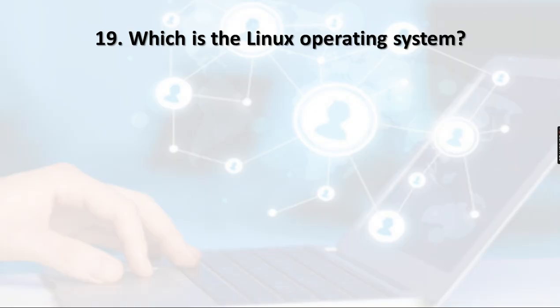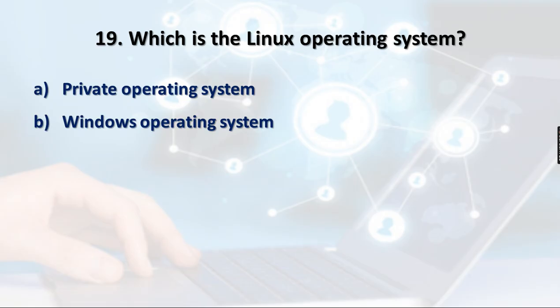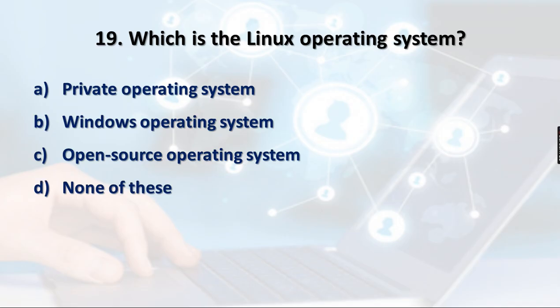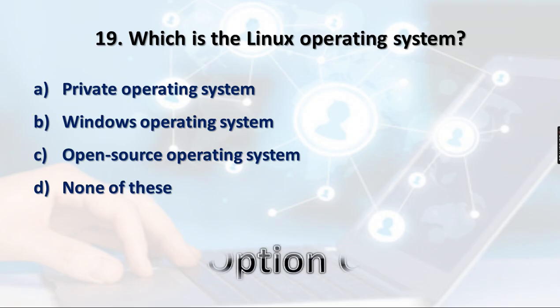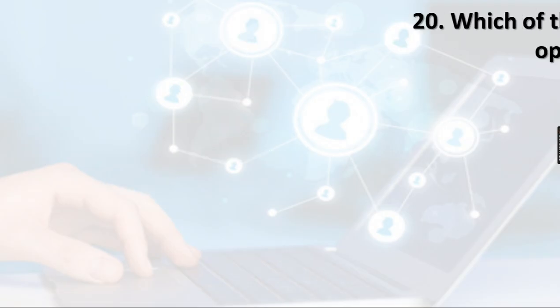Question 19: What kind of operating system is Linux? Is it a private operating system, a Windows operating system, or an open source operating system? Linux is not private and not Windows — it is an open source operating system. Option C is the right answer.